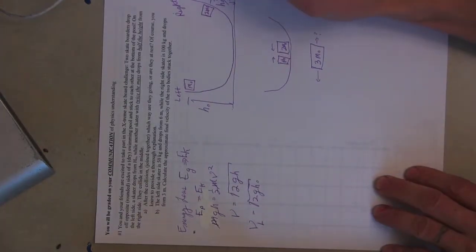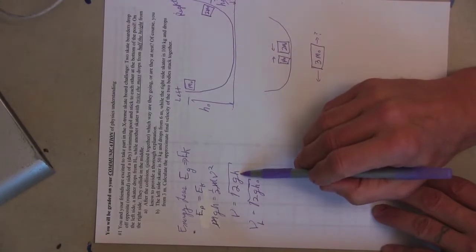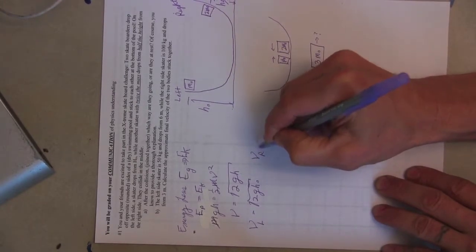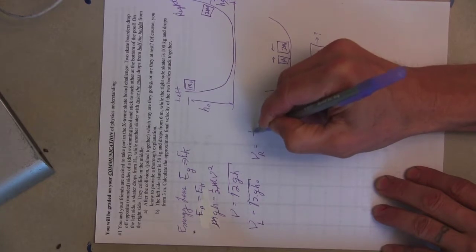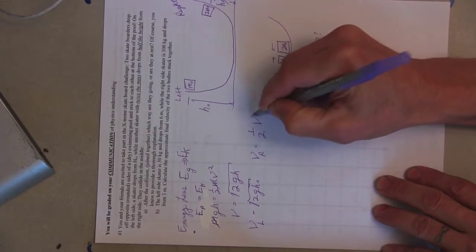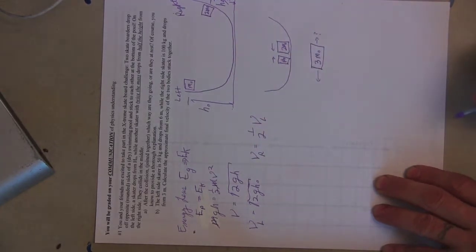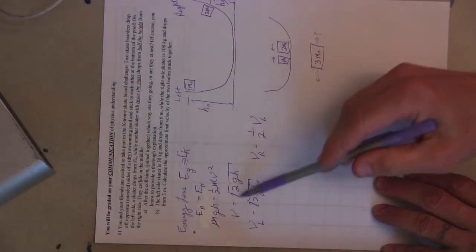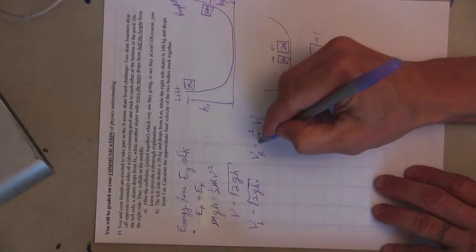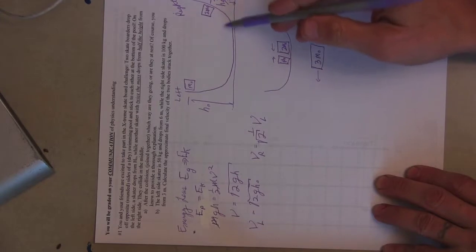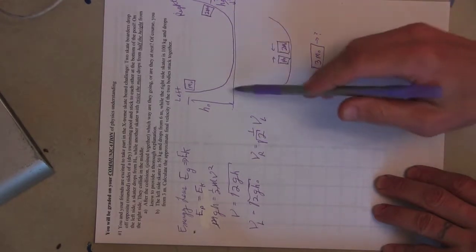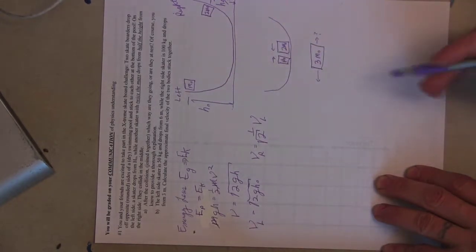How about on the right? Well, it falls from half the height. So v on the right is equal to one-half v on the left. Is that right? No, because this is a square root. And so the velocity of this guy would be 1 over root 2, the velocity of the person on the left.